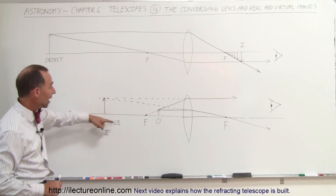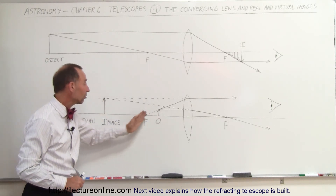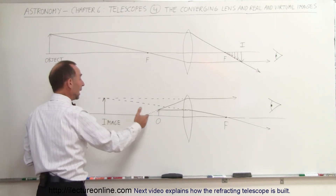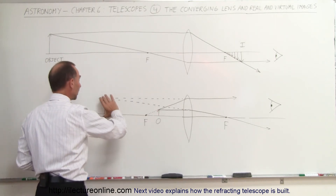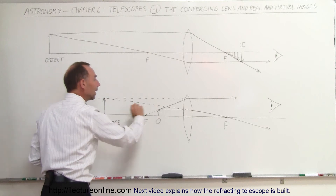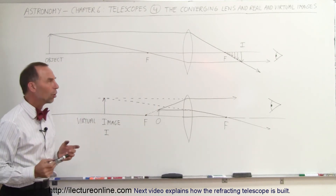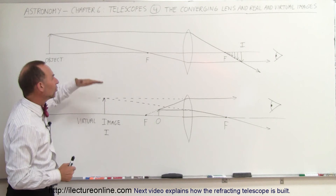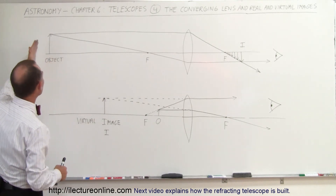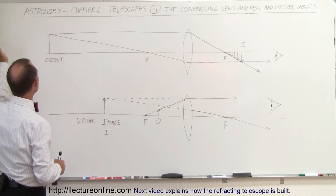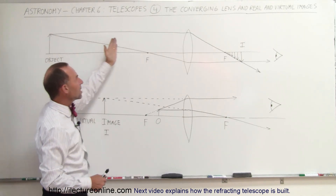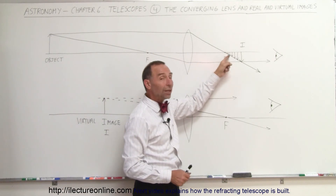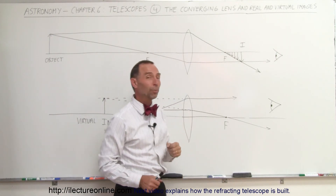Notice that the virtual image is the same orientation as the object — the object is right side up, and the image is right side up. Also notice that the image is much larger than the object. A telescope is an instrument that combines these two properties. In one case, you have an object really far away, you let the rays go through a lens, and you form a real image very close to the focal point.